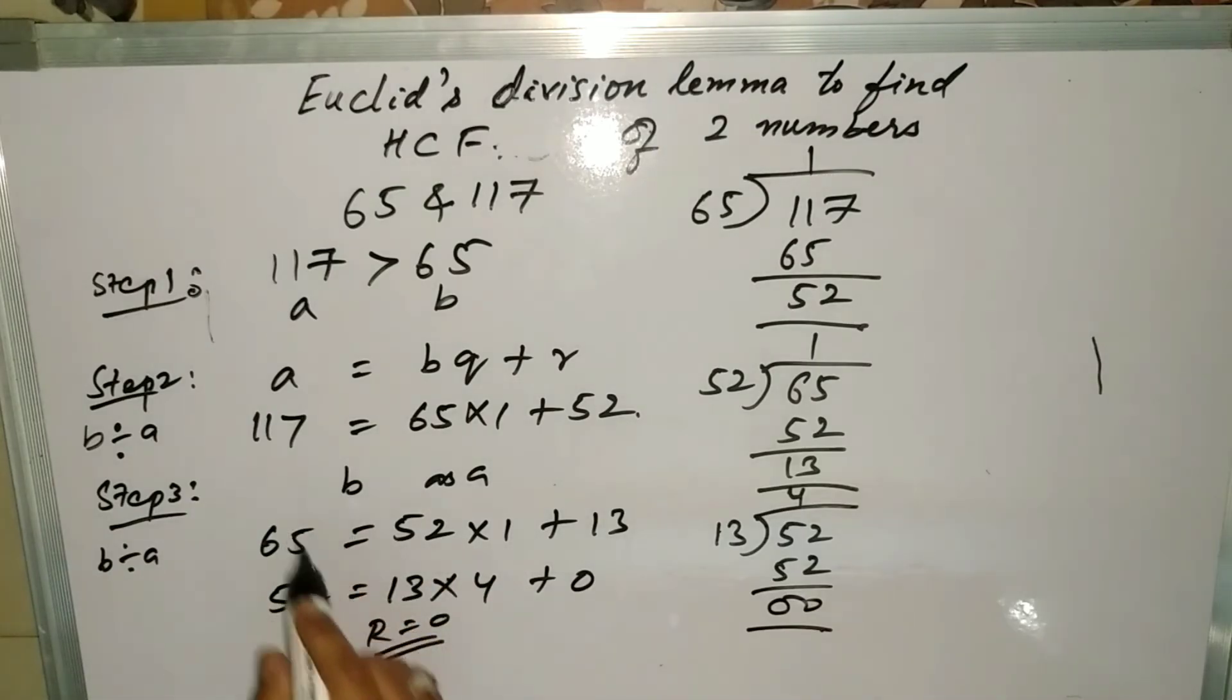In this we got the remainder as 0. That means the last number which is b is the HCF of these two numbers. That is 13 is the HCF.